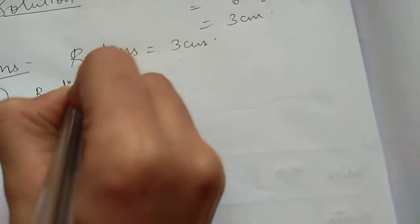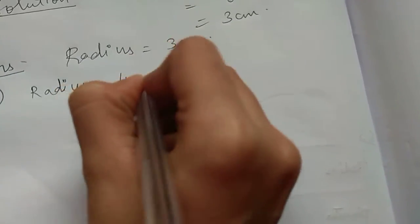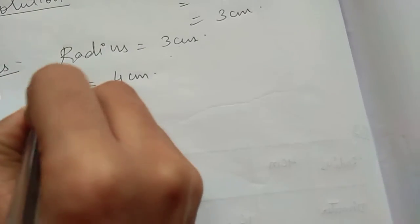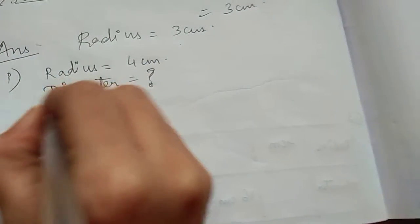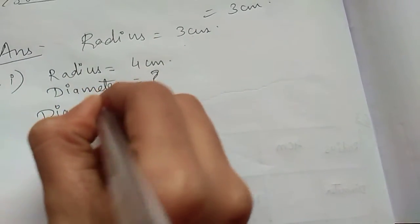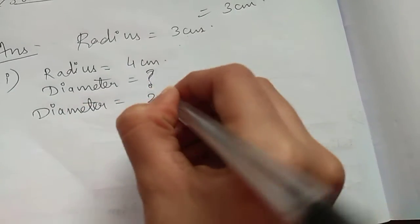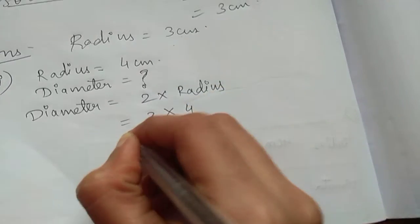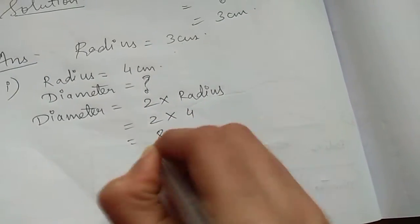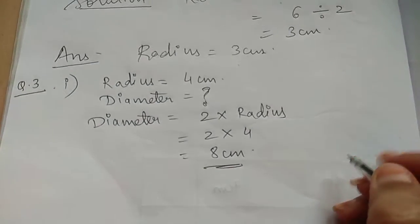This question number 3 first part, we will write what is given: radius 4 centimeter. So diameter we have to find. What's the formula of diameter? 2 into radius. 2 multiply by 4, that gives us 8 centimeter.